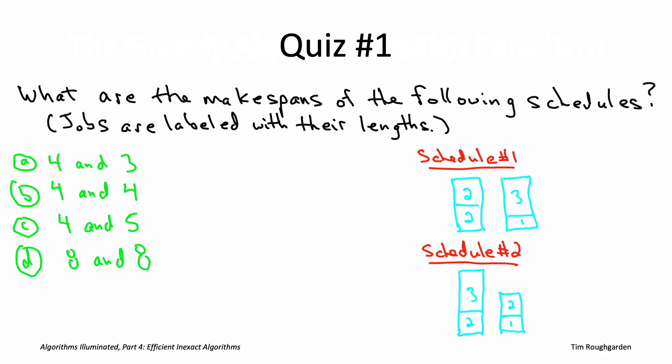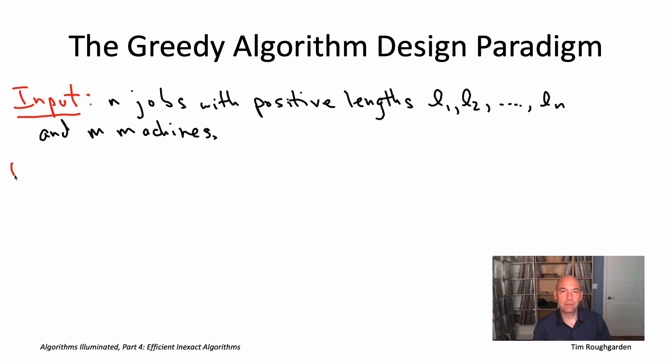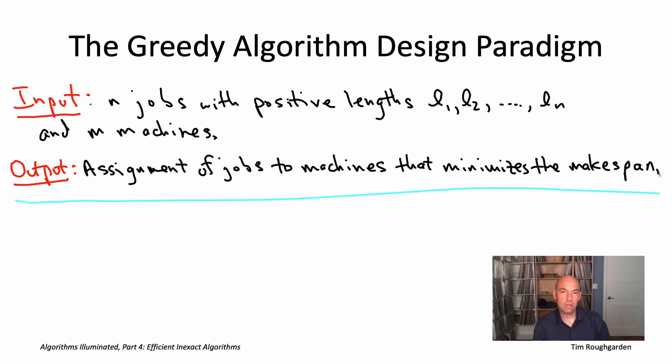If the definitions were clear, the quiz should have been straightforward. The answer is C. The load of a machine is the sum of the lengths of the jobs assigned to it. In the first schedule, machine one has load 2+2=4 and machine two has load 1+3=4, so the makespan is 4. In the second schedule, machine one has load 2+3=5 and machine two has load 1+2=3, so the makespan is 5. Now the makespan minimization problem is: given m machines and n jobs with specified lengths, assign each job to a single machine so that the maximum machine load is as small as possible.